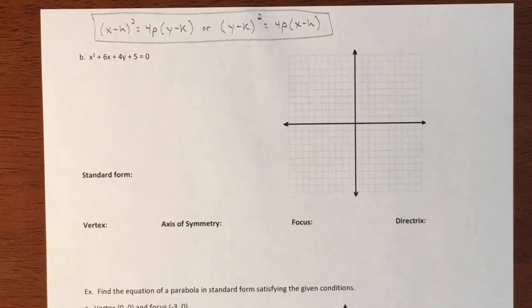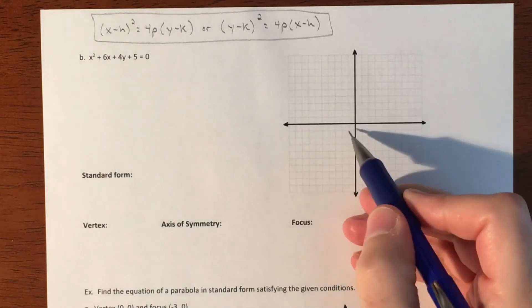In this video, this is our second example for graphing a parabola that is not in standard form. Well, actually the other one was standard form, but our graph is not going to be at the origin. It's going to be at some h,k, so it's going to be somewhere off of the origin.